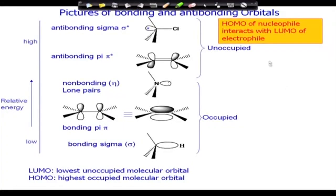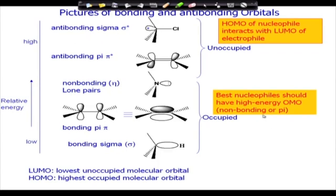The HOMO of a nucleophile interacts with the LUMO of an electrophile. When the nucleophile displaces chlorine, the sigma-star of C–X is the LUMO — it is the lowest unoccupied molecular orbital — and the HOMO of the nucleophile donates electrons into it. The best nucleophile should have a high-energy, non-bonding HOMO. The lower the gap between the HOMO and the LUMO, the more facile the reaction.